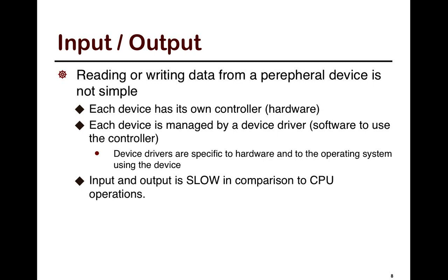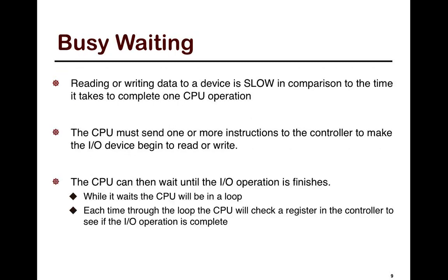Input/output is normally very slow compared to CPU operations — we're talking about 10 orders of magnitude, so 10 to the 10. A lot of the time CPUs operate at gigahertz scale. If you go to faraway devices, they operate at a much slower scale, possibly even once every second. Most I/O devices operate in the millisecond range.